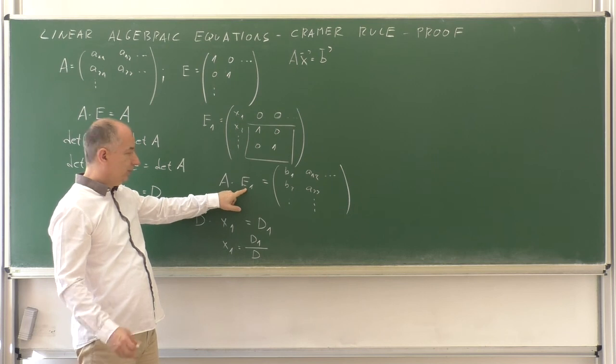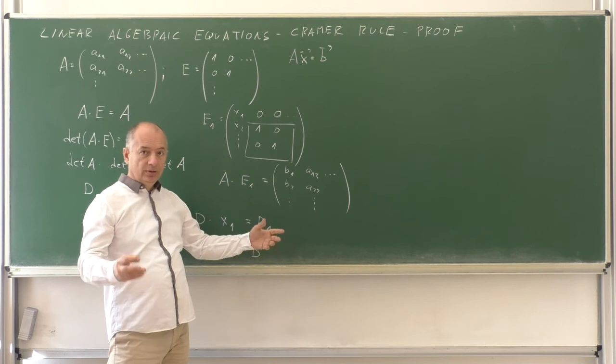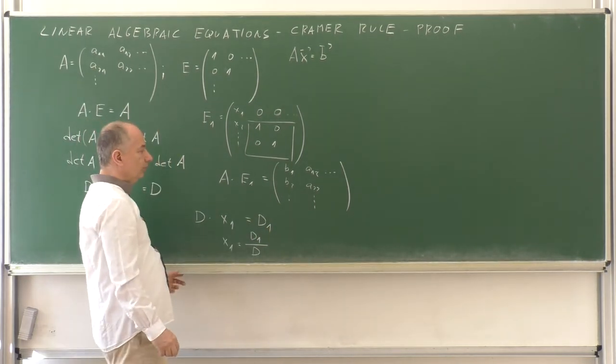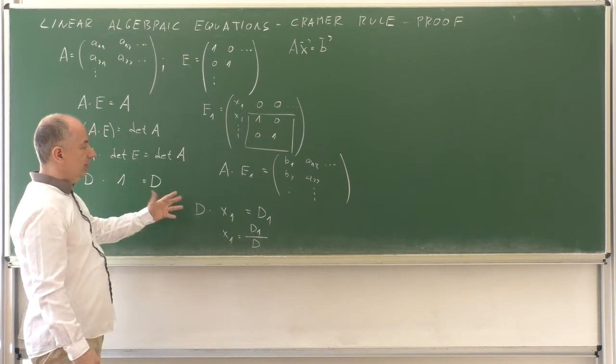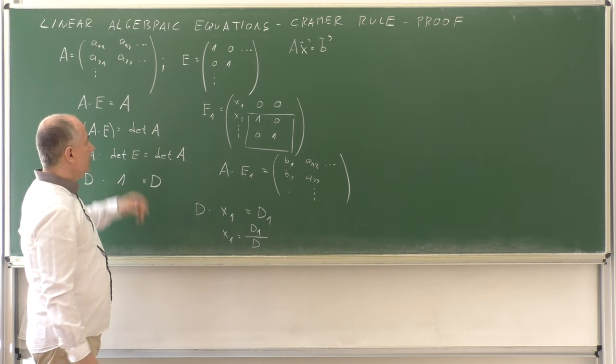The determinant of EK will be X sub K. And this will be the DK, the determinant from the Cramer's rule. So, this is the explanation that this ratio is indeed the unknown in the system of equations.